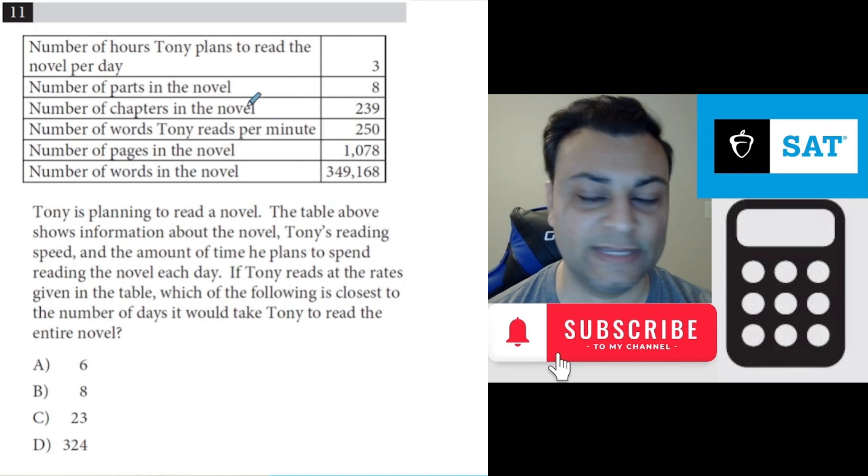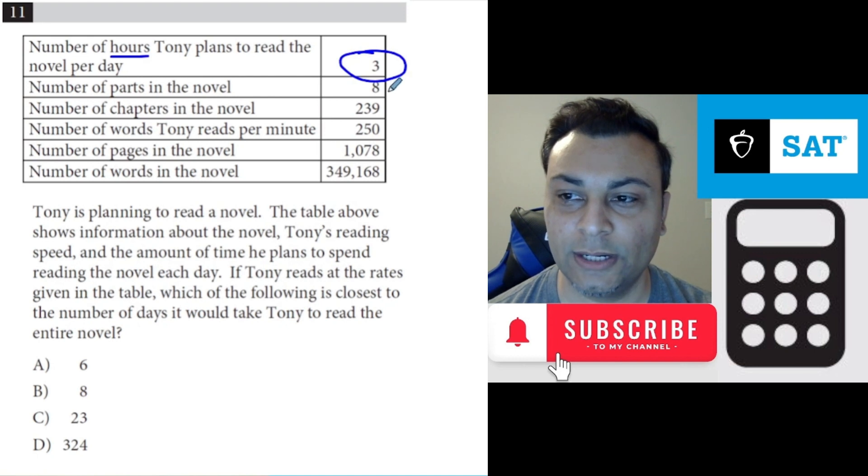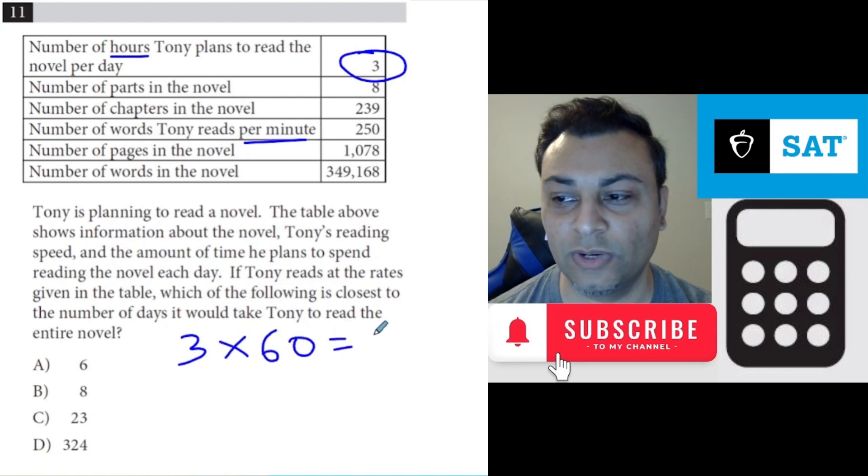One thing we noticed is that he plans to read three hours a day. But we need that in minutes. So three hours times 60 minutes to an hour gives you 180.